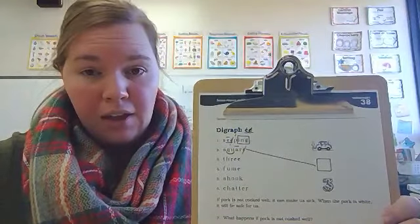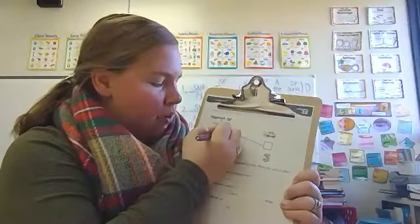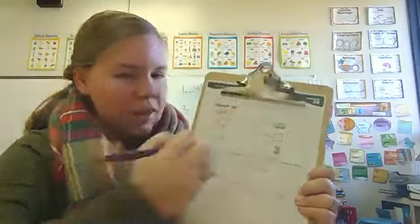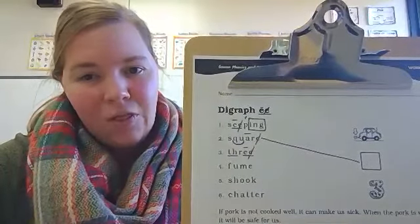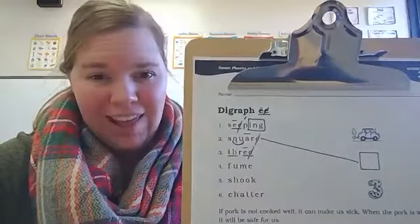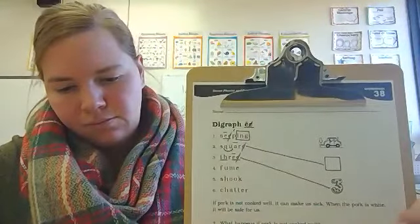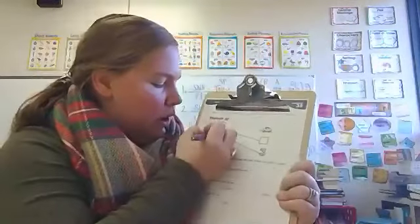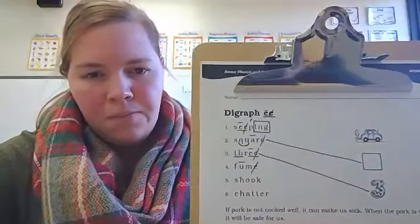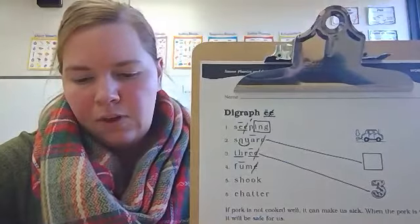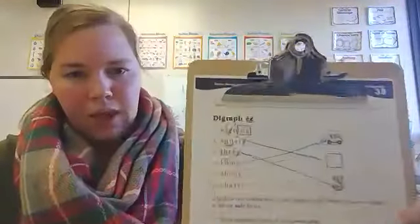There are two digraphs in number three — digraph T-H, underline; digraph E-E, macron above the first E, cross out the second E. Only one E sound. This word is three — number three says three. That matches with our picture of the number three. Number four: U consonant-E, macron above the U, cross out the final E. Can you read number four? Fume. That is showing out of the back of the car. That is your final picture match.